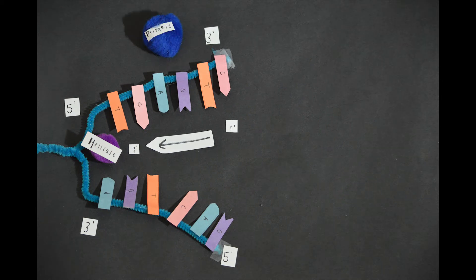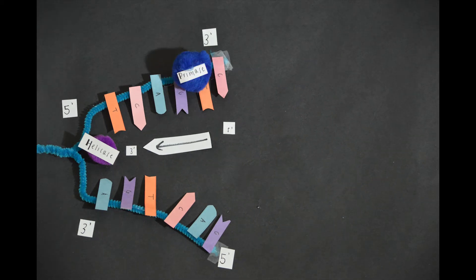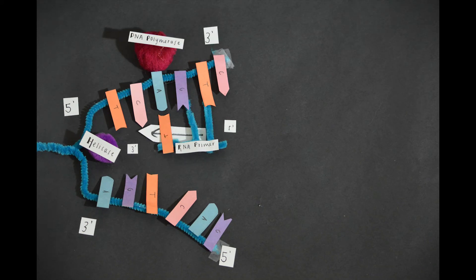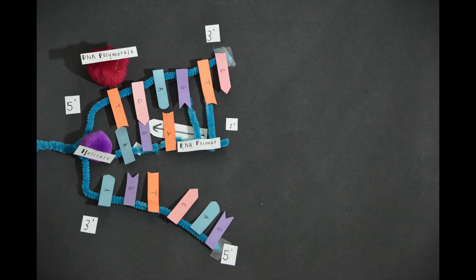Now, an enzyme called the primase allots an RNA primer to a certain location in the parent strand, and this is where the replication process begins. Another enzyme called DNA polymerase comes in and bonds with the RNA primer, and together they create the new complementary strand.